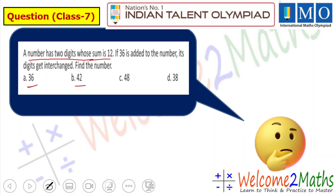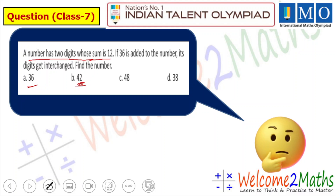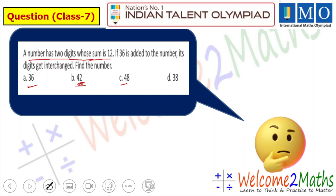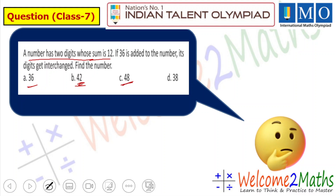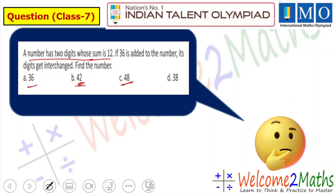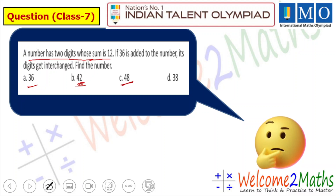Next one is 4 and 8: 4 plus 8 is 12. It equals 12! So option C could be our answer. Let us also check option D.